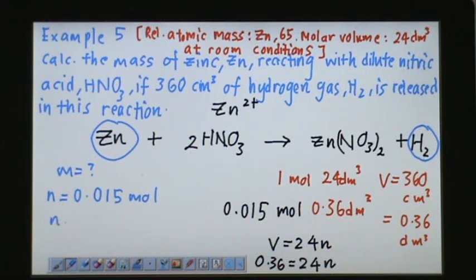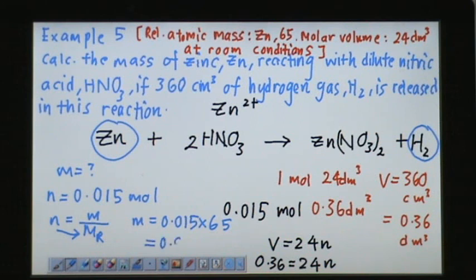So you can find the mass quite easily if you use this formula. If you remember. So the mass will be the mole times the relative mass. 0.015 times 65. Zinc is 65. So what you have here is 0.015 times 65. You have 0.975 grams.